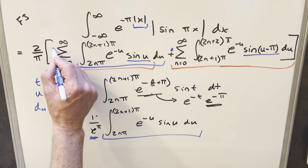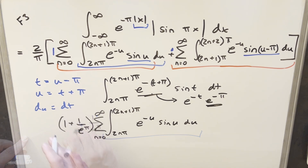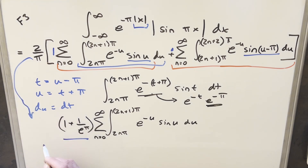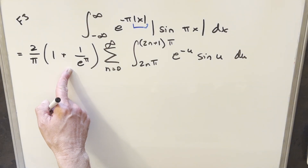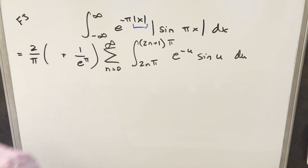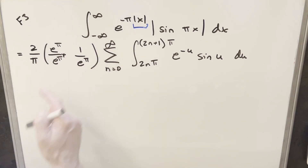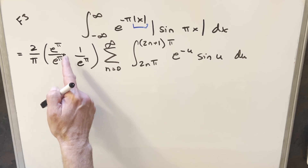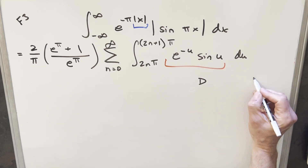Putting the summation back in and combining, we get (1 + 1/e^π) times the sum, with the 2/π factor out front. Getting a common denominator for (1 + 1/e^π): writing 1 as e^π/e^π, the numerator becomes (e^π + 1) over e^π. Now we're finally ready to integrate using integration by parts — the DI method (tabular integration). I'll differentiate sin u and integrate e^(−u).